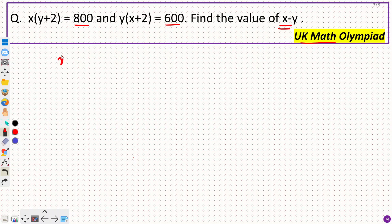So we have x into y plus 2 equal to 800 and y into x plus 2 as 600.